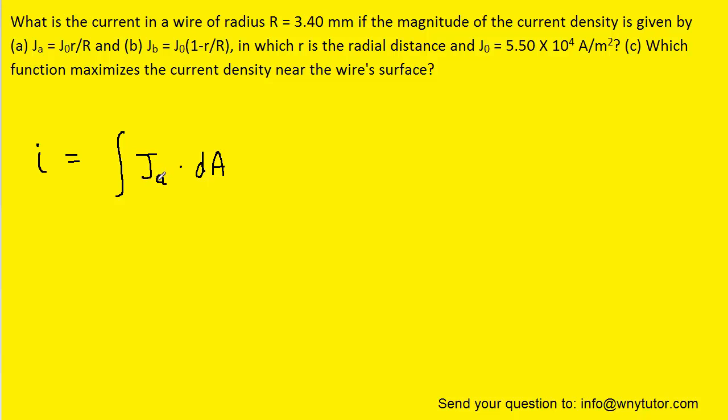We have J sub A representing the current density, and for part A that was given to us as follows. So we can substitute in this expression for the J sub A.